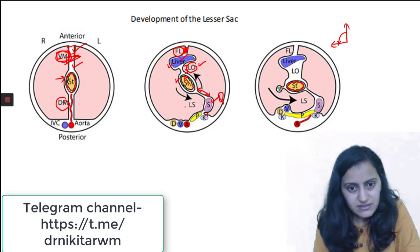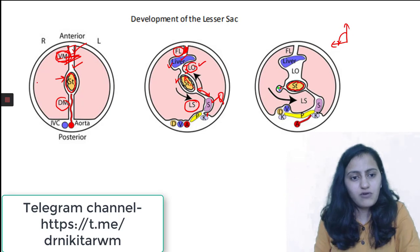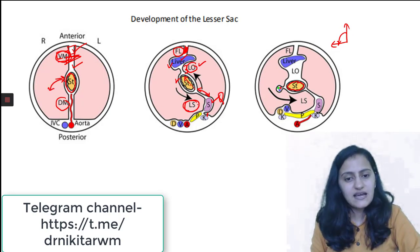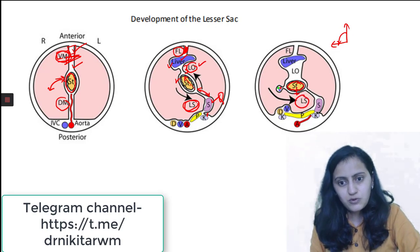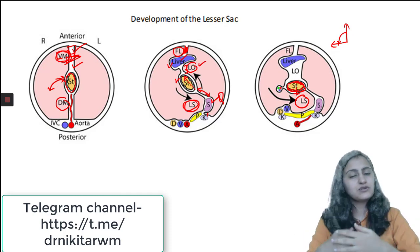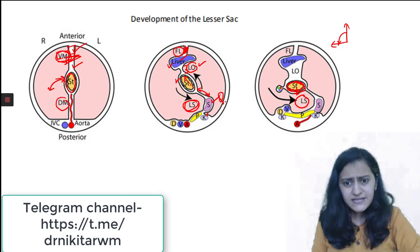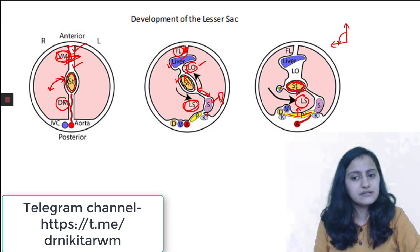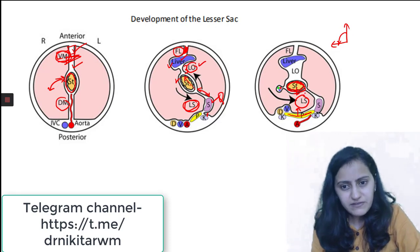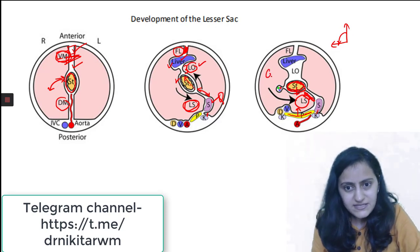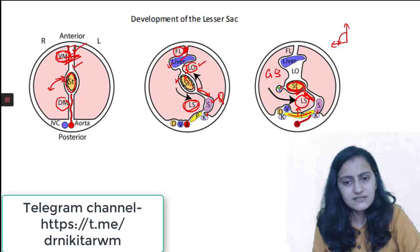As the stomach rotates, posterior to the stomach is the lesser sac which is formed. So the lesser sac is actually posterior to the stomach. You can see the pancreas, and the lesser sac is anterior to it. To the left of the lesser sac, the left boundary is formed by the gastrosplenic ligament and the lienorenal ligament. The greater sac and the lesser sac are the two spaces here.